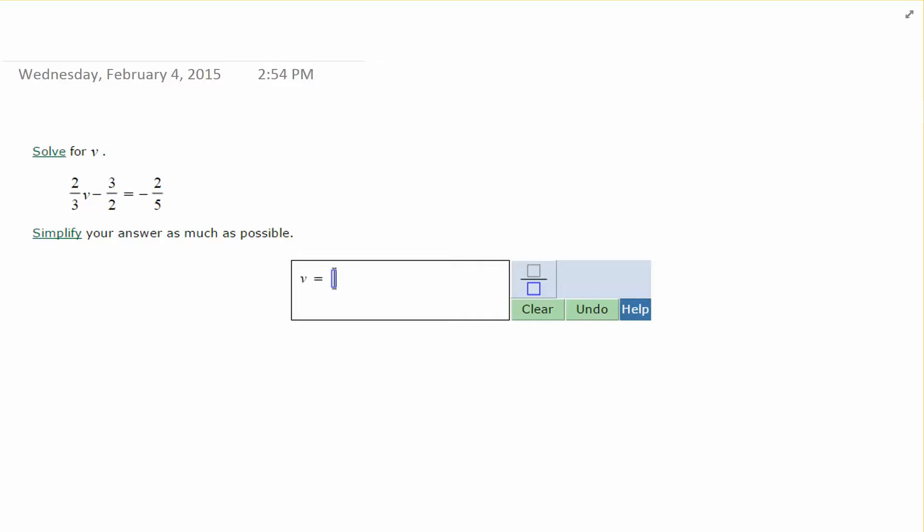For this algebra topic, we want to solve an equation that has signed fractions in it. The best method to use for this is to find the least common denominator. Always look at the largest denominator and see if it works, but 3 and 2 do not go into 5.